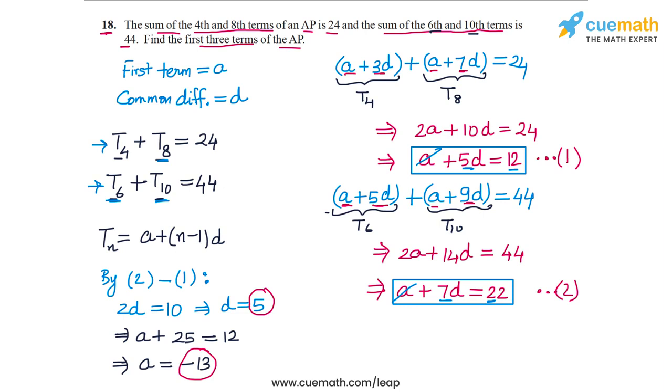Now it's very easy to write the first three terms of the AP. The first term is minus 13, the second term is minus 13 plus 5, that's minus 8, and the third term is minus 8 plus 5, that's minus 3. So the first three terms of the AP are minus 13, minus 8, and minus 3.